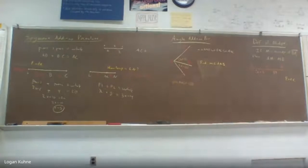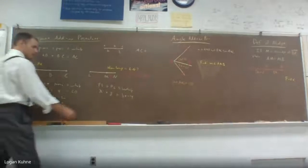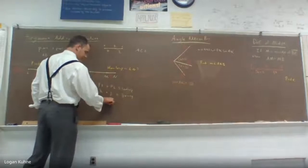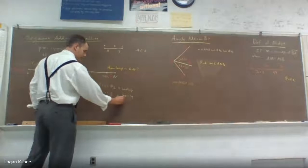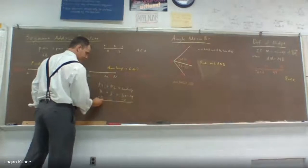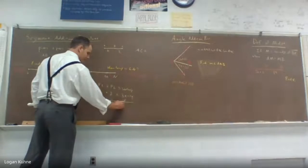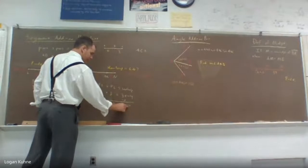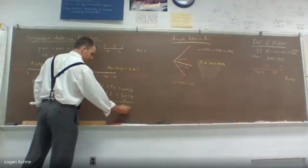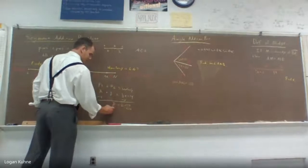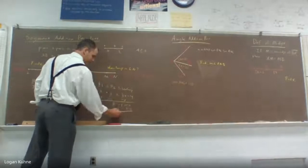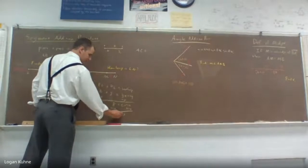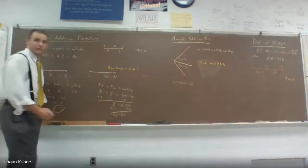The whole thing is 3X minus 14. Part one plus part two is equal to the whole thing. And then we just do some algebra. Subtract 8 from both sides, I'm sorry. Actually, I'm going to subtract X from both sides. So 8 is equal to 2X minus 14. I'm going to add 14 to both sides. 2X is equal to 22. So therefore, X must be 11, correct?